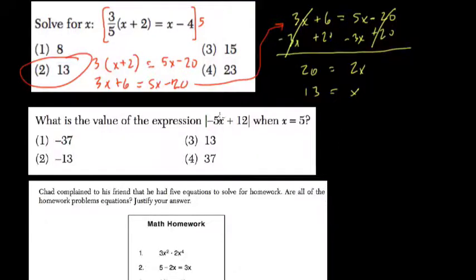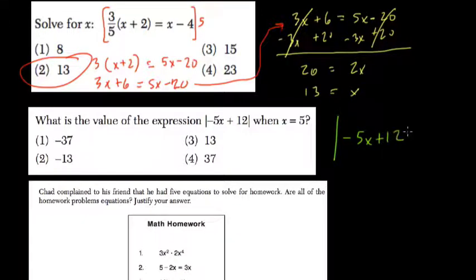What is the value of the expression? The absolute value sign right here — negative 5x plus 12, when x equals 5.